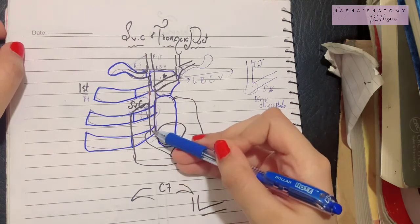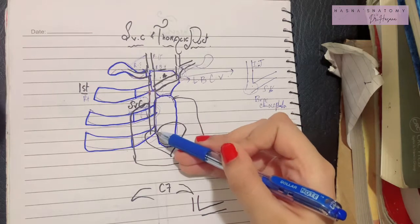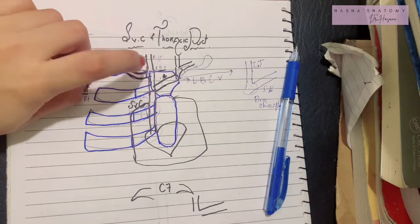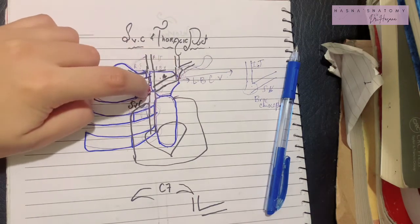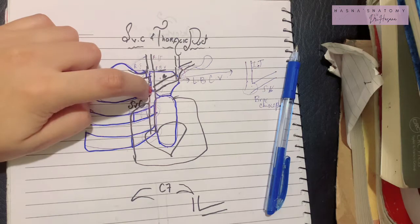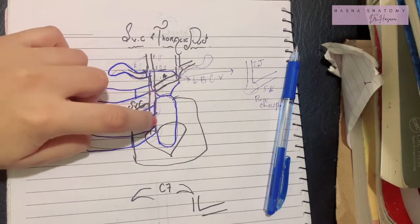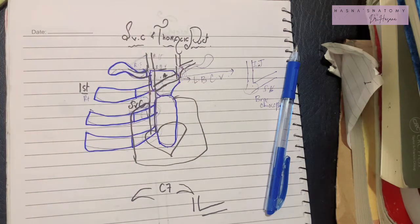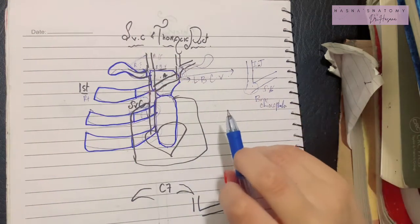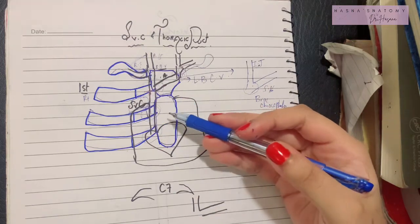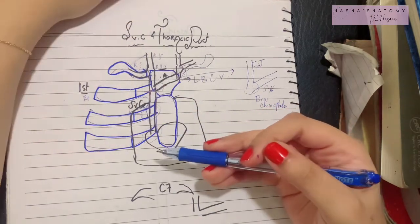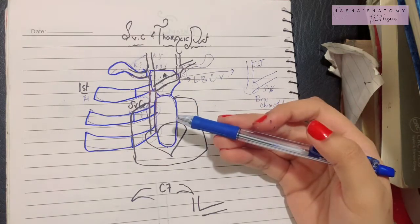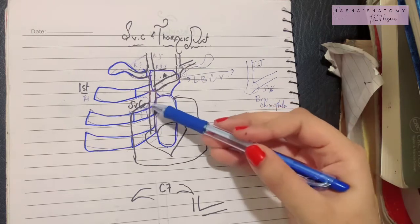Important landmarks to remember: at the sternoclavicular joint the brachiocephalic veins are formed; at the first right costal cartilage the superior vena cava is formed; at the second right costal cartilage it pierces the pericardium; and at the third costal cartilage it enters and terminates in the heart. Its tributaries include the azygous vein, which enters its posterior aspect at the T4 vertebra, as well as several small mediastinal and pericardial veins.